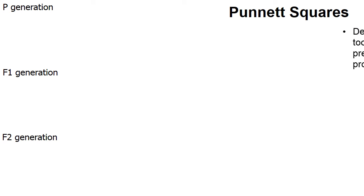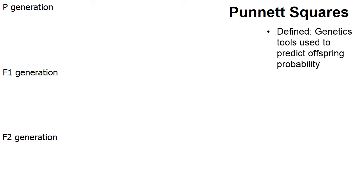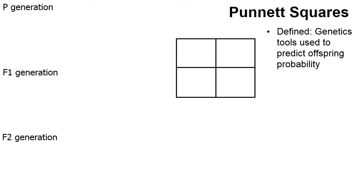Now I want to show you how we can use Mendel's work in solving Punnett squares. Punnett squares are genetic tools that we use to predict offspring probability. In middle school when you've done Punnett squares, they look like this — four squares to fill in. Let's show you how to set up a Punnett square.